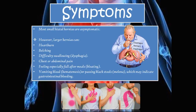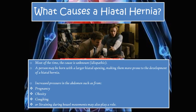If a patient has a small hiatal hernia, many are asymptomatic. However, large hernias are more problematic. Symptoms include heartburn, belching, difficulty swallowing (dysphagia), chest or abdominal pain, feeling especially full after meals or bloating, vomiting blood (hematemesis), and passing black stools (melena). Hematemesis and melena indicate gastrointestinal bleeding.